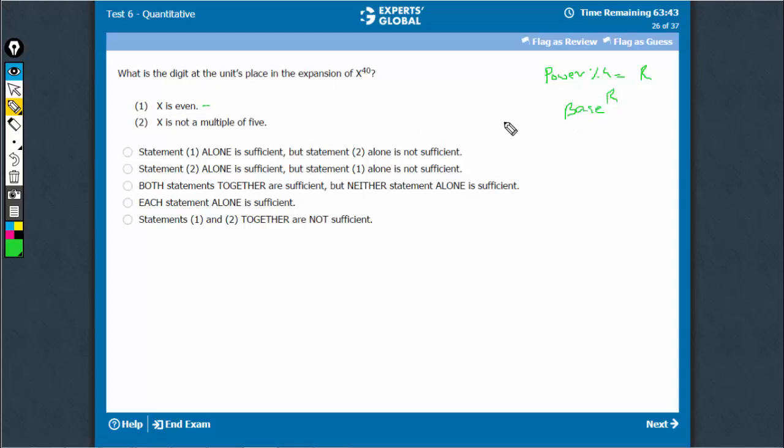Since x is even using statement 1, it can be 2 raised to power, the remainder is going to be 0 here. 40 divided by 4 is going to be 0 remainder. 0 is not the right value to take, since it is 4 with 40, 0 means a remainder of 4 practically. When the remainder is 0, take it as 4.